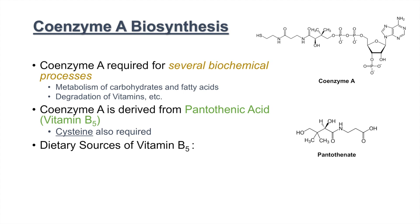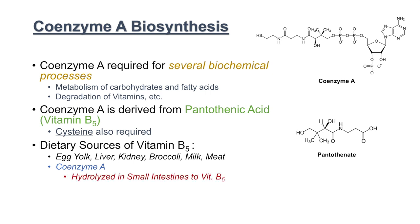Where do we get our vitamin B5? It comes from our diet. Some of the dietary sources of vitamin B5 include egg yolk, liver, kidney, broccoli, milk, and other types of meats. We can also get vitamin B5 from ingesting coenzyme A — our body will actually hydrolyze the coenzyme A in the small intestines to vitamin B5, and then reprocess it back into coenzyme A. Another important source includes bacterial production of vitamin B5.